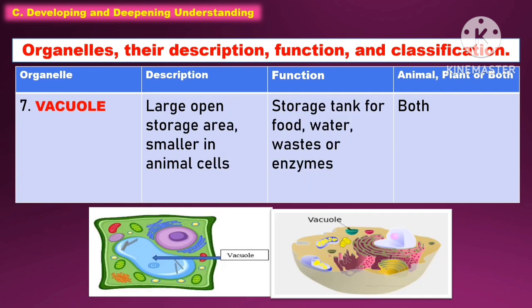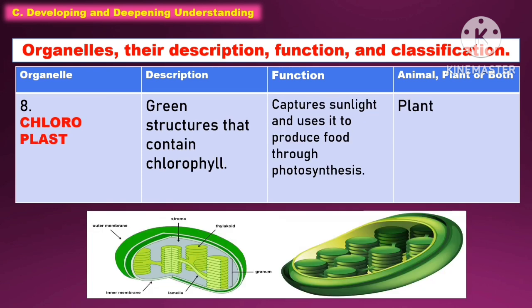Another organelle is the vacuole — a large open storage area, smaller in animal cells. The function of this is to serve as a storage tank for food, water, waste, or enzymes. It is present in both animal and plant cell.